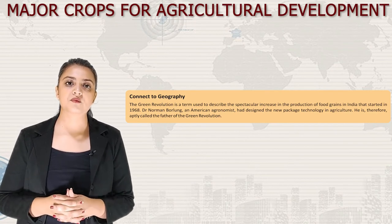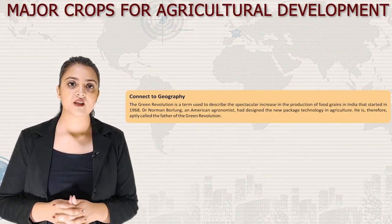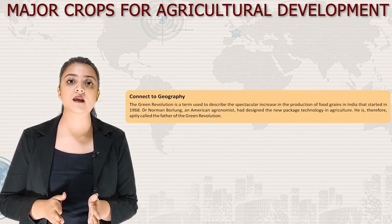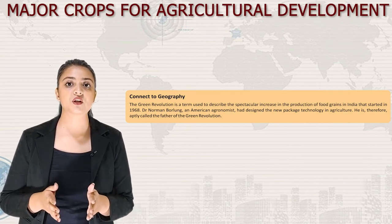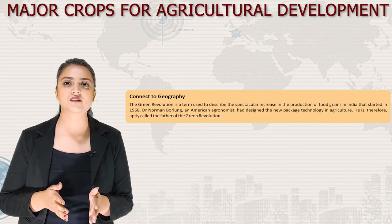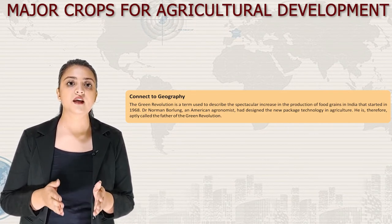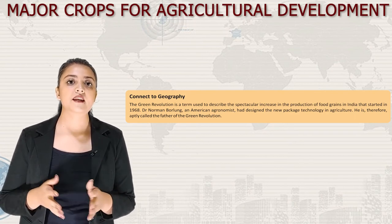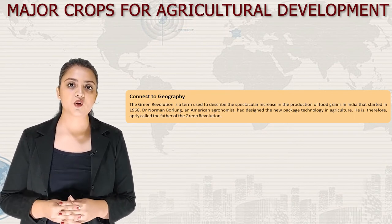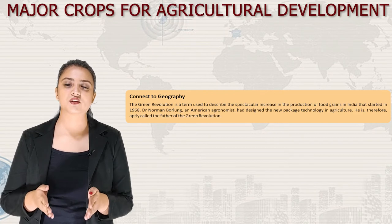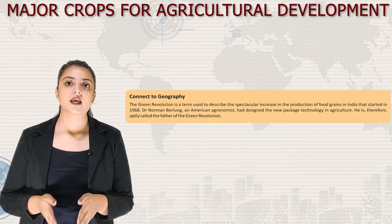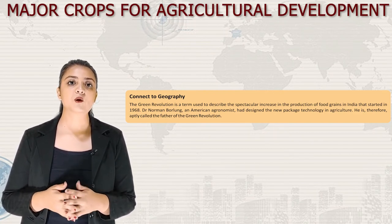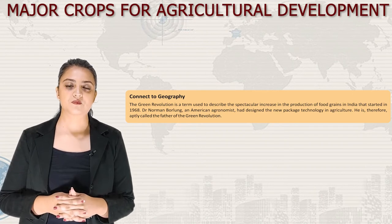The Green Revolution is a term used to describe the spectacular increase in the production of food grains in India that started in 1968. Dr. Norman Borlaug, an American agronomist, designed the new package technology in agriculture in 1968. He is therefore aptly called the father of the Green Revolution.